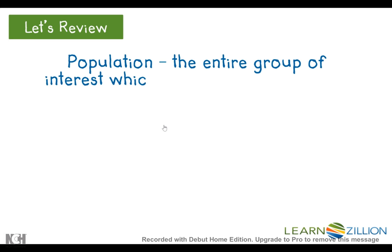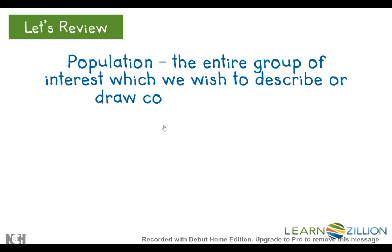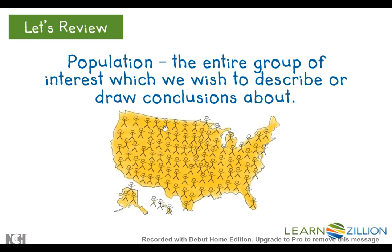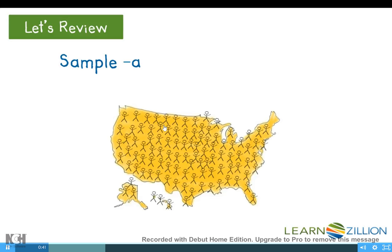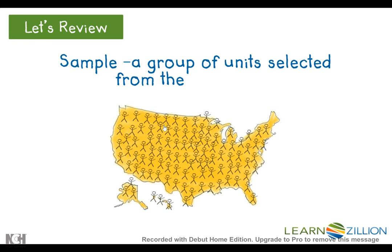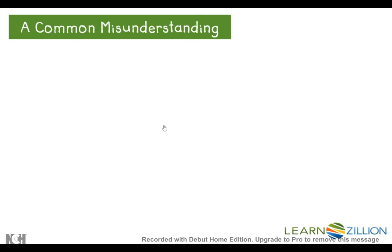A population is the entire group of interest which we wish to describe or draw conclusions about. When we talk about the population of a country, like the U.S., for example, we are talking about every single person who lives there. A sample is a group of units selected from the population. A common misunderstanding is confusing population, sampling frame, and census.